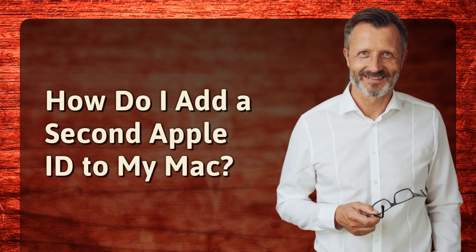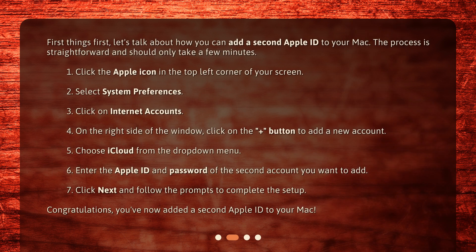How do I add a second Apple ID to my Mac? First things first, let's talk about how you can add a second Apple ID to your Mac. The process is straightforward and should only take a few minutes. 1. Click the Apple icon in the top left corner of your screen. 2. Select System Preferences. 3. Click on Internet Accounts. 4. On the right side of the window, click on the plus button to add a new account.